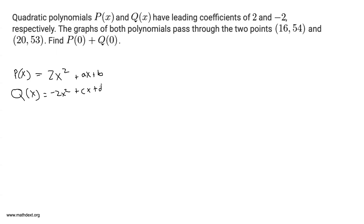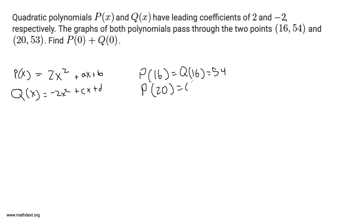We have constructed two polynomials that satisfy the problem statement: p(x) is quadratic with leading coefficient 2, and q(x) is quadratic with leading coefficient negative 2. What else are we given? We are given that the graphs of both polynomials pass through the two points (16, 54) and (20, 53). That means p(16) = q(16) = 54, and p(20) = q(20) = 53.